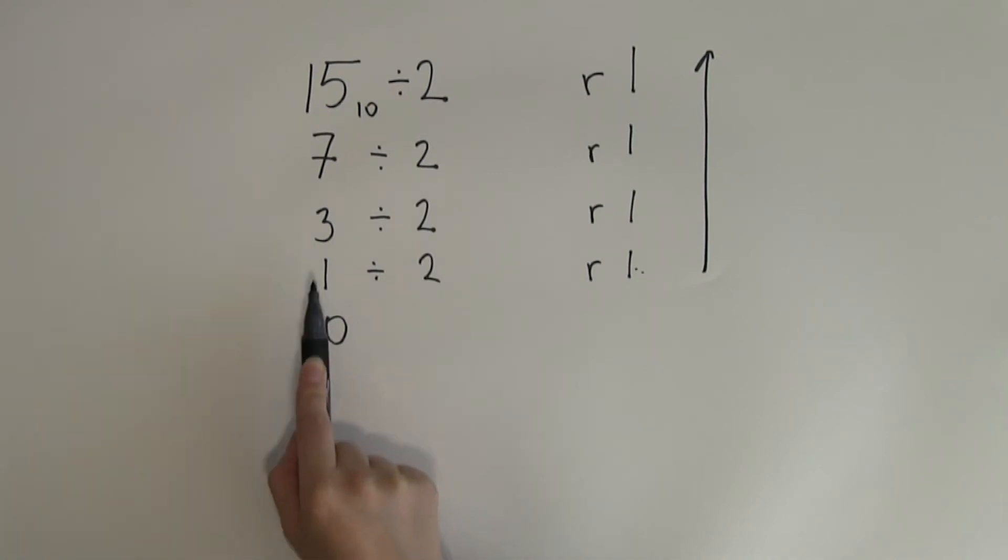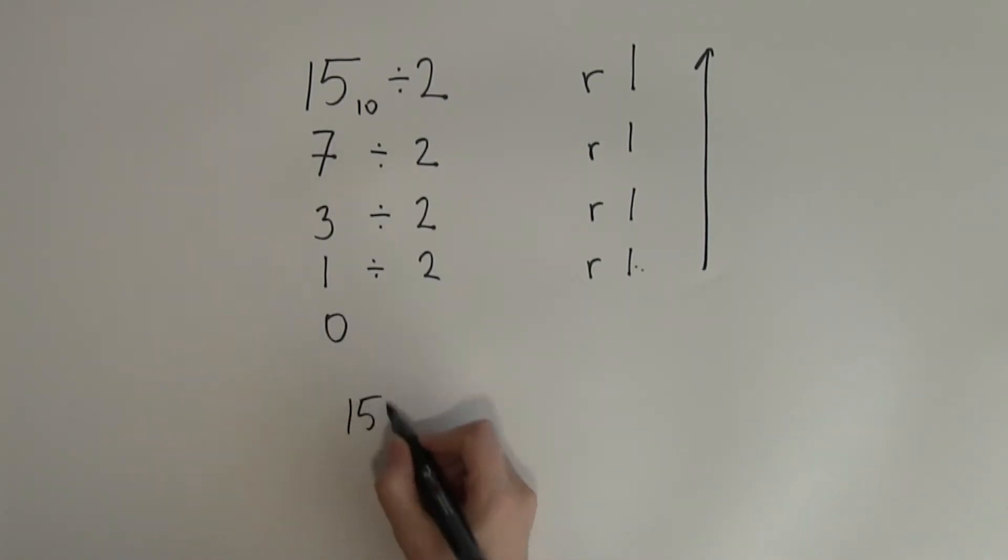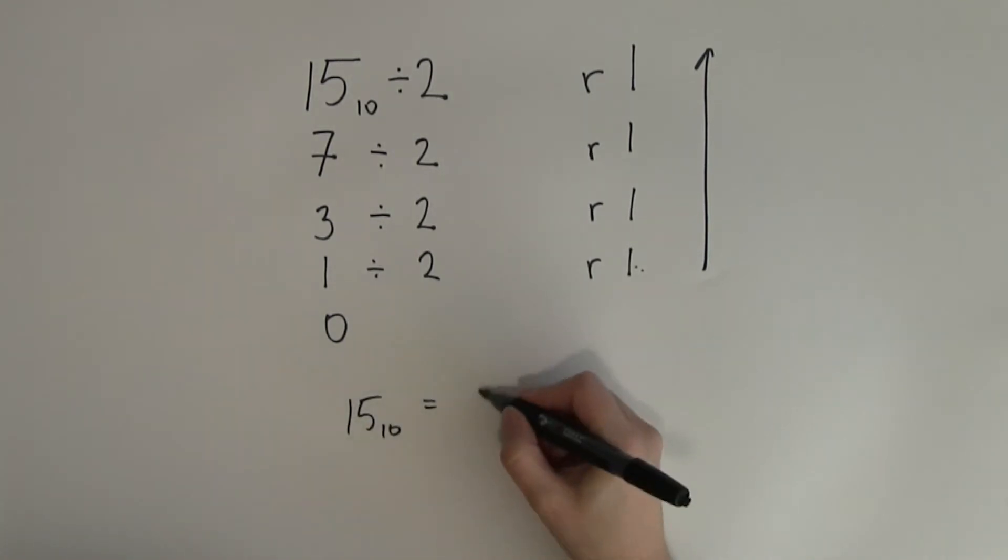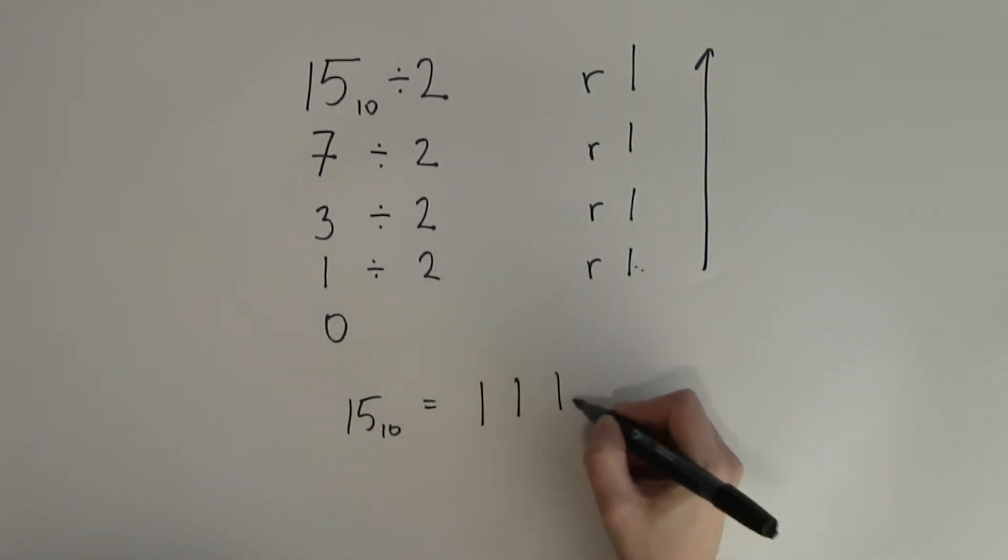Another thing is you cannot stop your division here because this means that you haven't divided by all the necessary place values. You have to keep going until you get an answer of 0 here. So that's the last step.